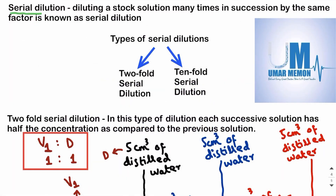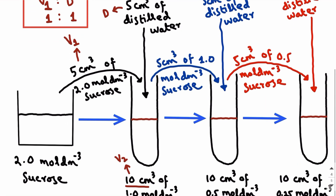Now we will discuss serial dilution. Diluting a stock solution many times in succession by the same factor is known as serial dilution. Whenever we carry out serial dilution, we are diluting the stock solution in series many times, and at each successive dilution we are reducing the concentration of the solution by the same factor.